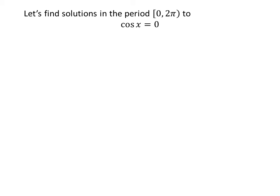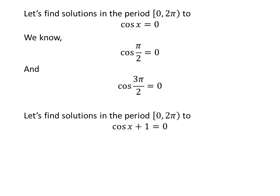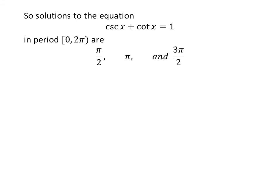Let us first find the solutions to the equation cos of x equals 0. We know the value of cos of 3 times pi upon 2 is 0. Now, let us find the solutions to cos of x plus 1 equals 0. Shifting 1 to the right-hand side gives us cosine of x is equal to minus 1. We know the value of cosine of pi is minus 1. So, the solutions to the equation cosecant of x plus cotangent of x is equal to 1 in the interval 0 to 2 times pi are pi upon 2, pi, and 3 times pi upon 2.